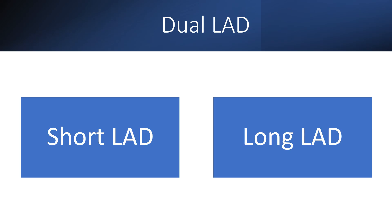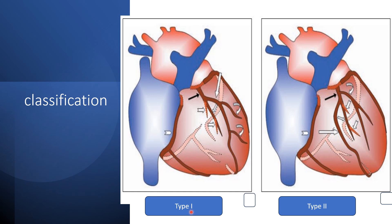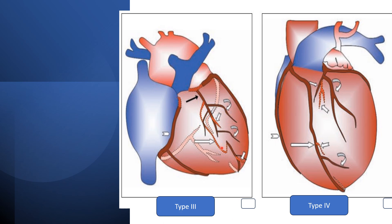Now we come to what is called the real dual LAD. In this classification, you should have two portions of LAD — one long and one short. A simple classification divides this into four types. In type one, the short LAD ends shortly in the interventricular groove, while the long one runs on the left side of the groove and enters near the apex. In type two, it runs along the right side of the groove. In type three, the long LAD runs a short intramural course and then reappears distally in the interventricular groove. In type four, the short LAD runs normally in the anterior interventricular groove while the long LAD arises from the RCA.